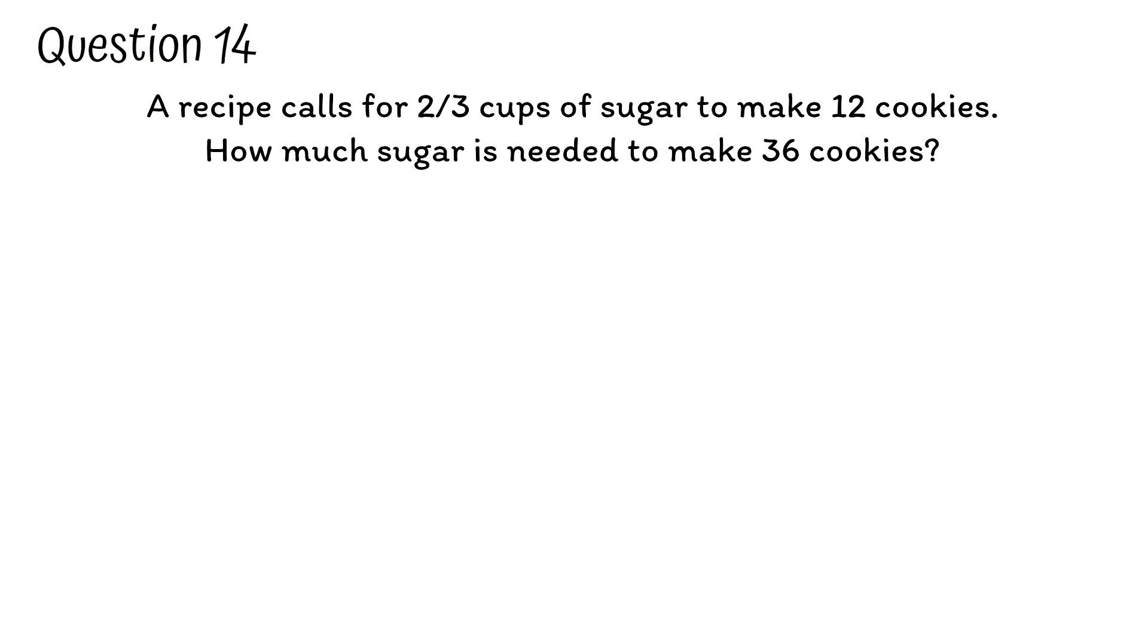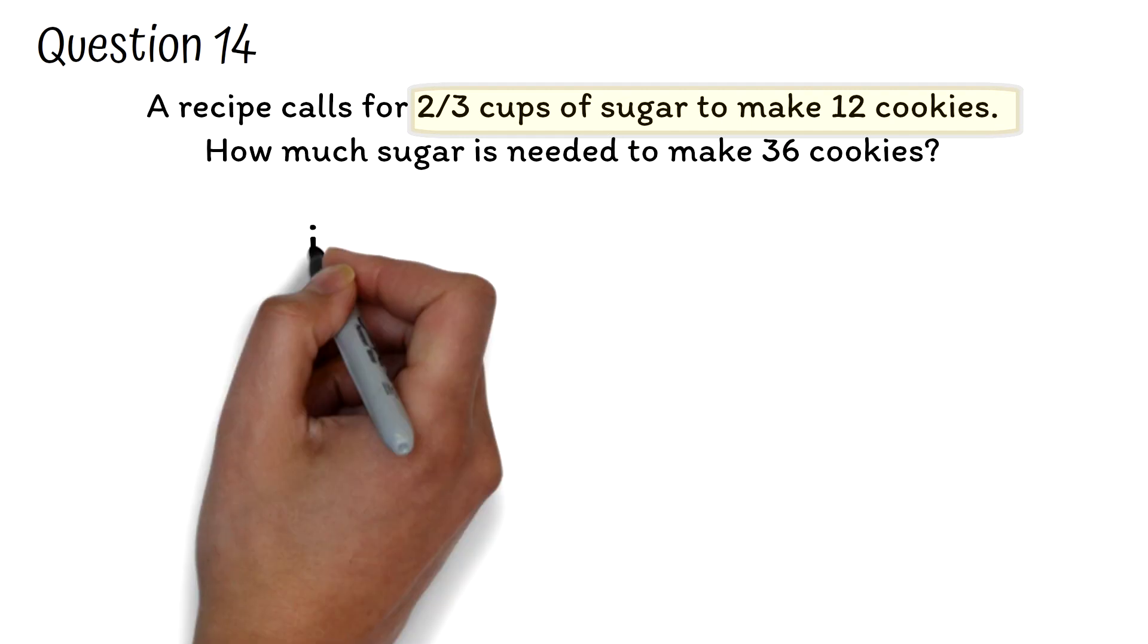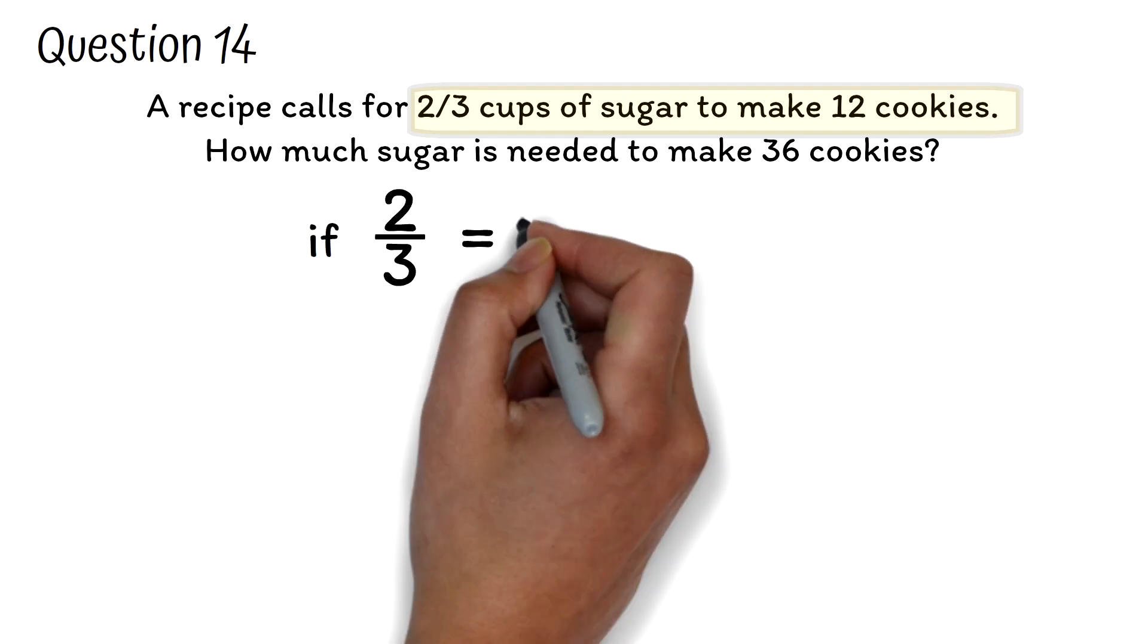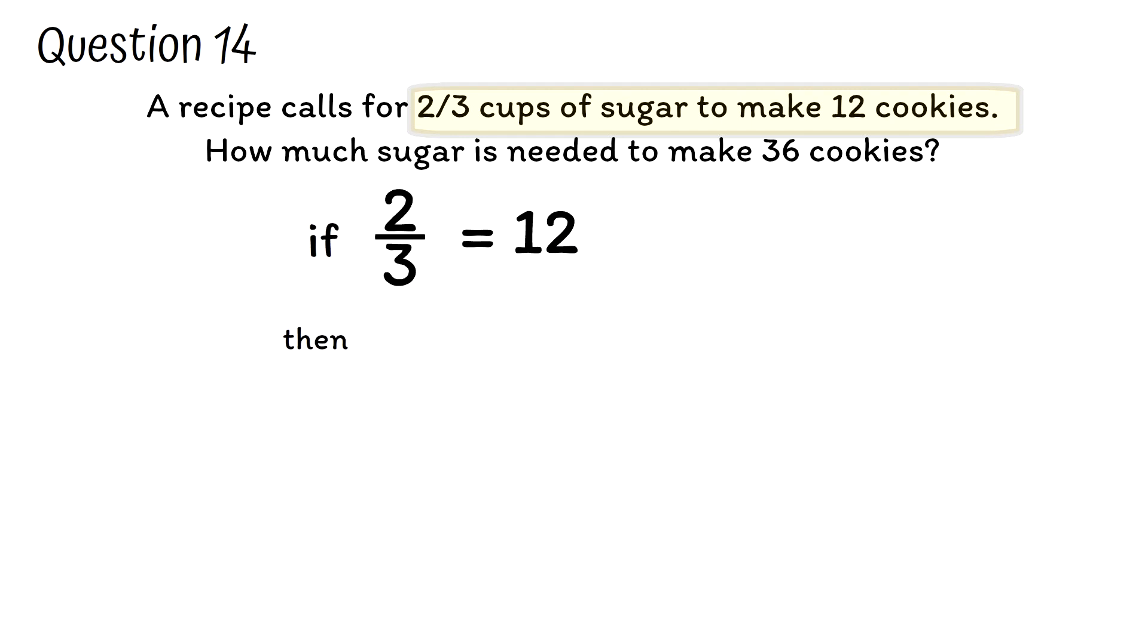Question 14. A recipe calls for 2/3 cups of sugar to make 12 cookies. How much sugar is needed to make 36 cookies? To pass any standard test, you have to be very familiar with word problems. Considering our question, we are given that 2/3 cups of sugar make 12 cookies. If 2/3 cups of sugar makes 12 cookies, then we can represent the cups of sugar needed to make 36 cookies as x equals 36.